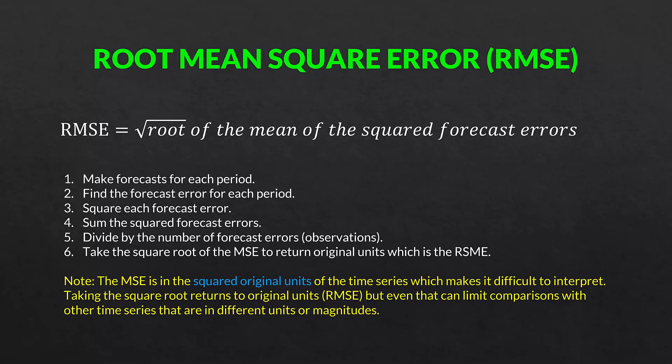Note that the mean square error is in the squared original units of the time series. In this case, before taking the square root, it's actually in squared US dollars, which doesn't make any sense. Taking the square root returns us to the original units, giving us the root mean square error. But even that can limit comparisons with other time series that are in different units or magnitudes — for example, GDP measured in a different currency, or in real dollars including inflation effects, or errors expressed as percentages for cross-series comparability.